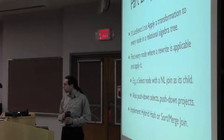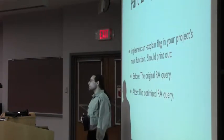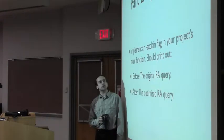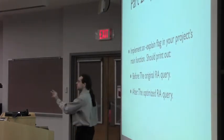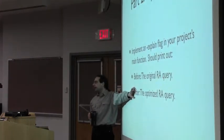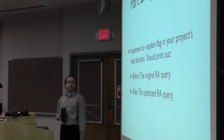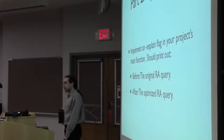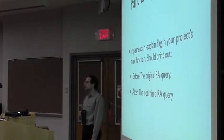How will you test this? Your main function should also accept a flag --explain. If you pass --explain and a query, it should print out both the original relational algebra query and the optimized form. The test will check whether you take appropriate advantage of situations where a hybrid hash or sort-merge join is possible. For reference, every single join in this workload is an equi-join, so you should be rewriting all of the joins.